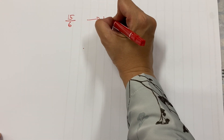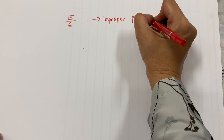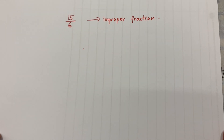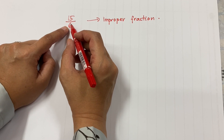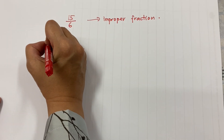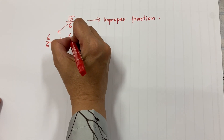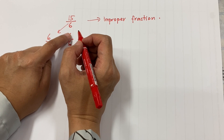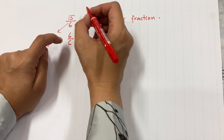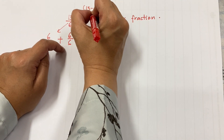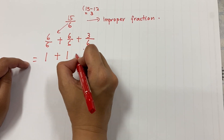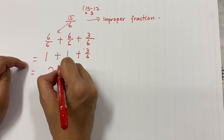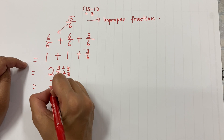If you're given just a number — the improper fraction — without the manipulatives or drawings, what can you do? You can either draw your model, or you can look at the denominator. That's 6, so you know it's talking about sixths. You take 6 out of 6 plus another 6 out of 6 — 6 plus 6 gives you 12. So for 15: 15 take away 12 gives you 3. That's 3 out of 6 extra. So 6 out of 6 is one whole, plus one whole, plus 3 out of 6. Your answer is 2 whole and 3 out of 6 — divided by 3, divided by 3 — your answer is 2 whole and a half.